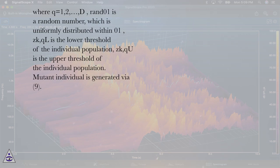Where Q=1,2,...,D, RAND[0,1] is a random number which is uniformly distributed within [0,1], Zk,Q,L is the lower threshold of the individual population, and Zk,Q,U is the upper threshold of the individual population.